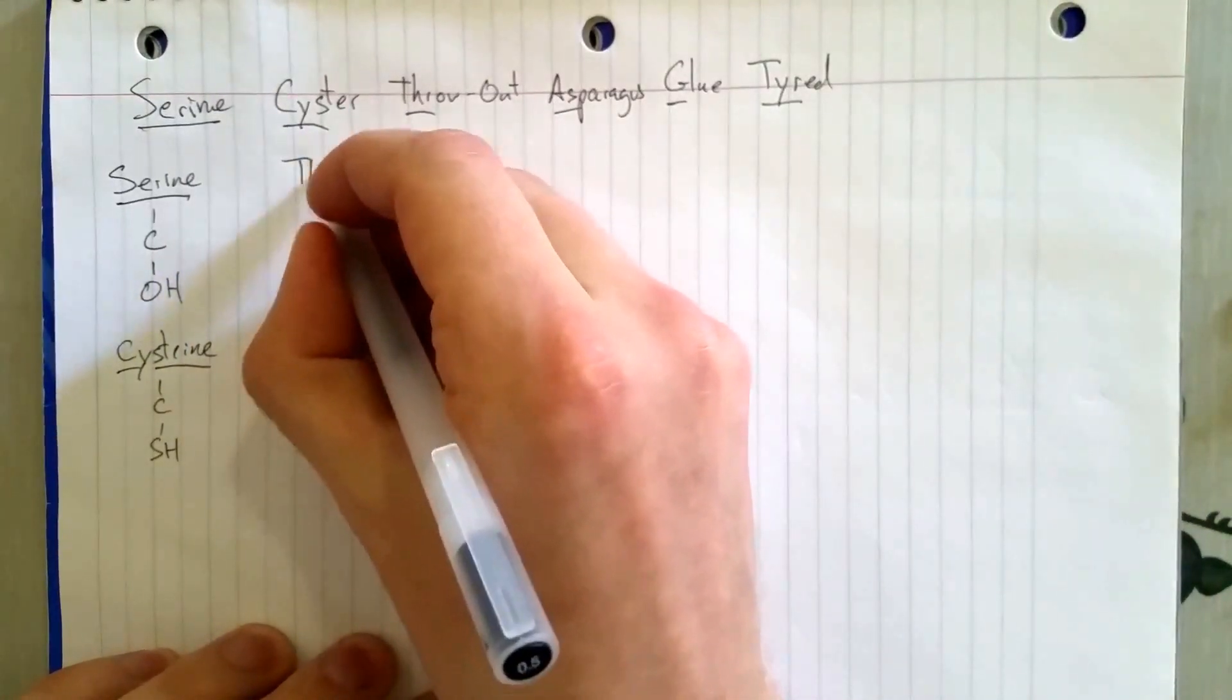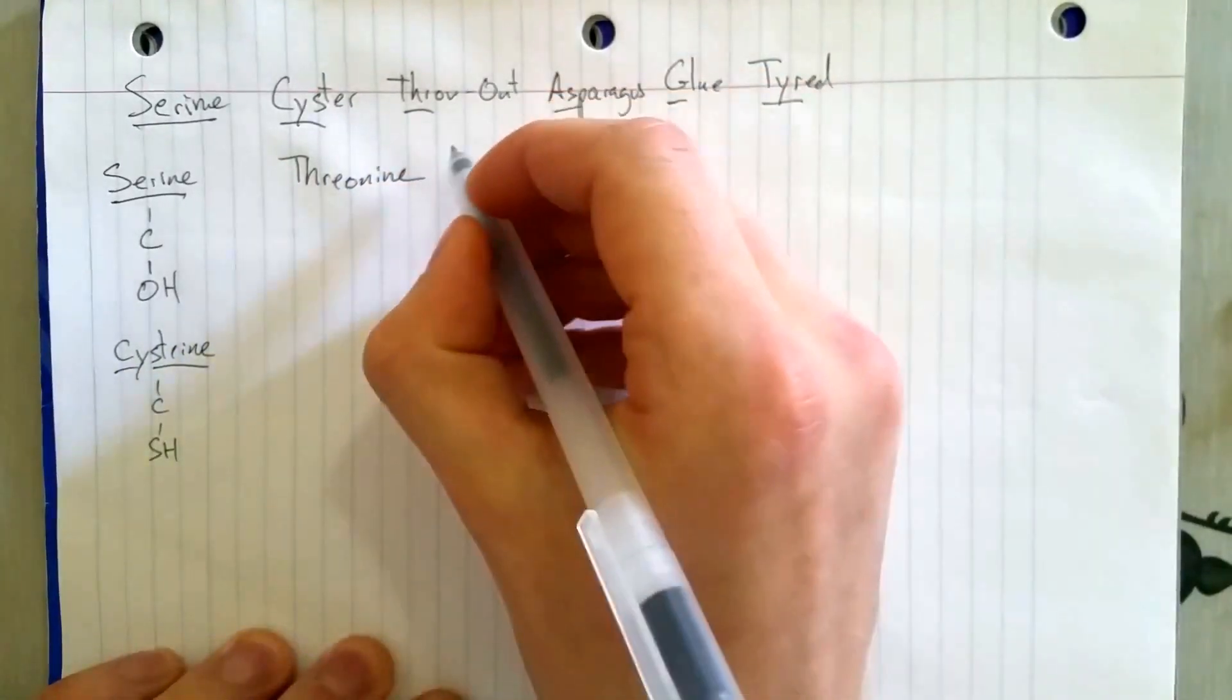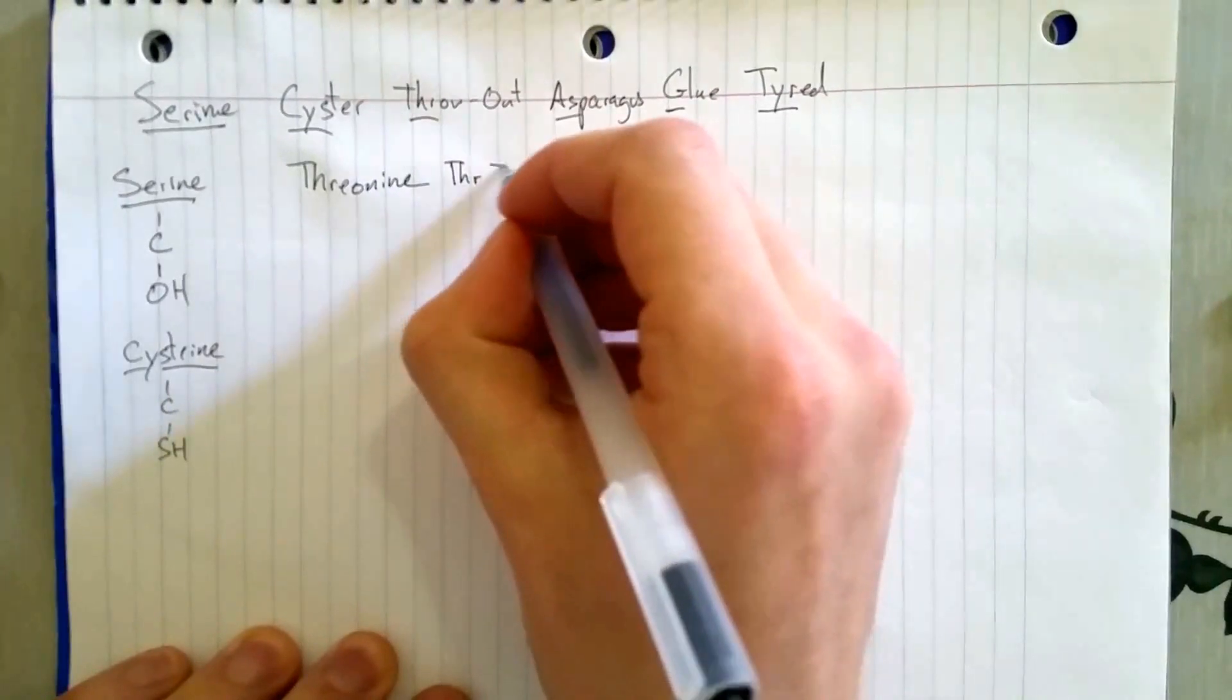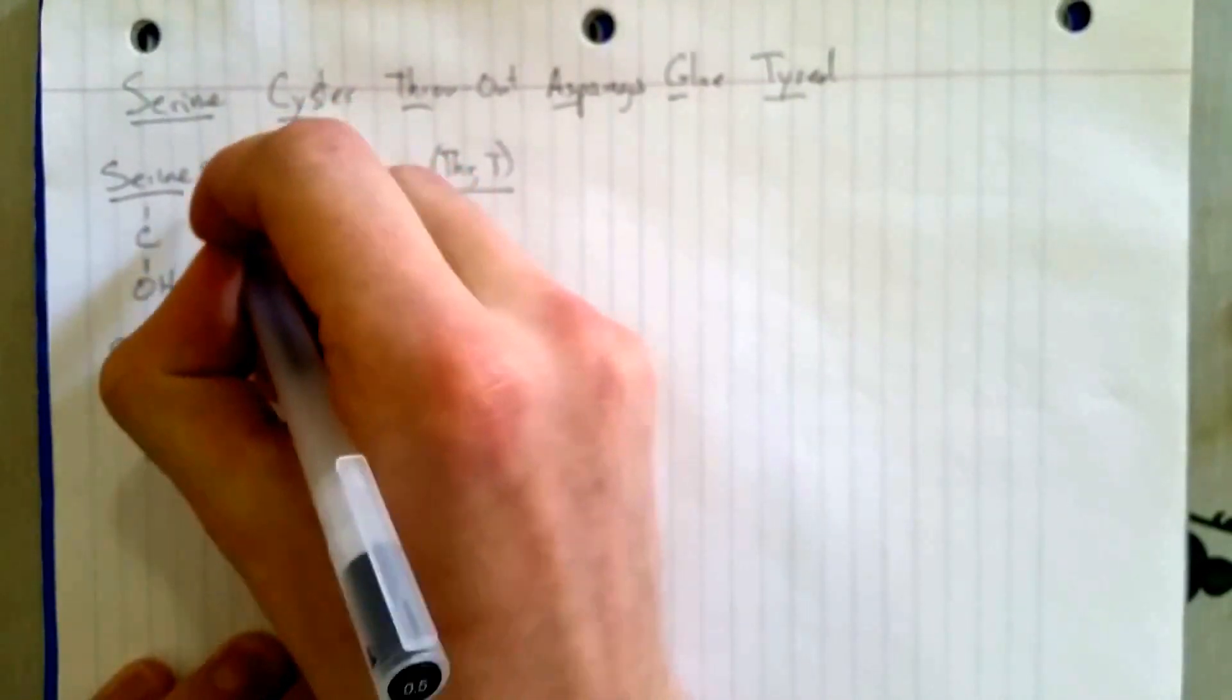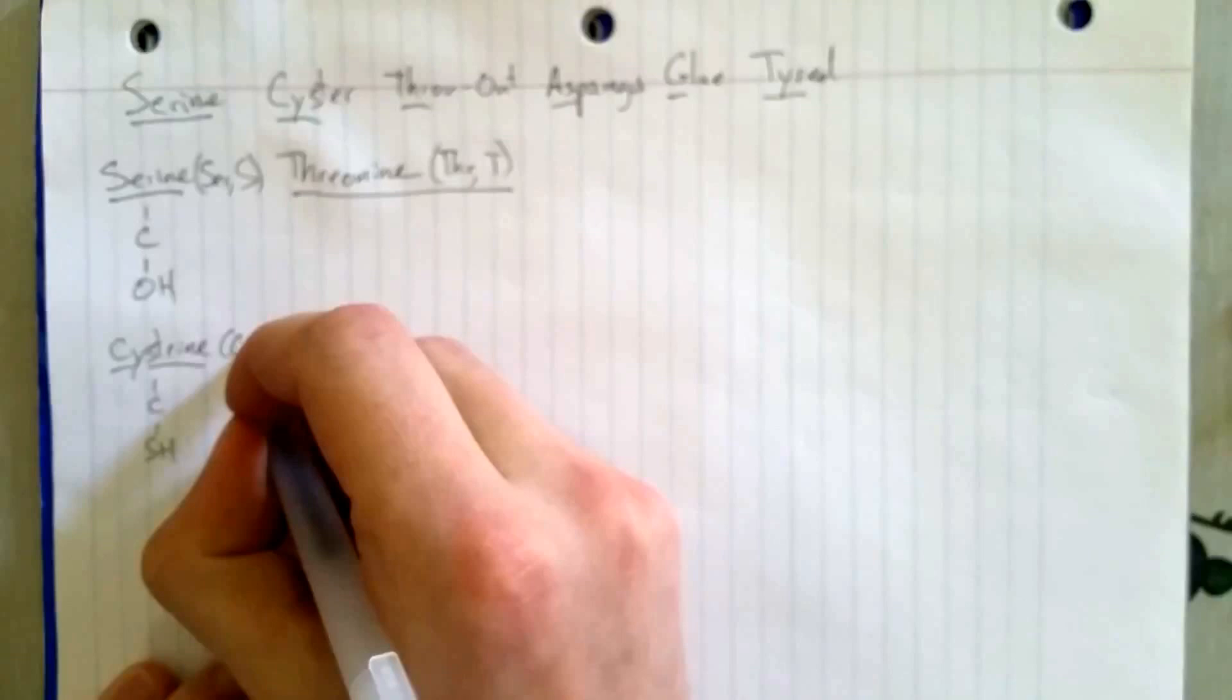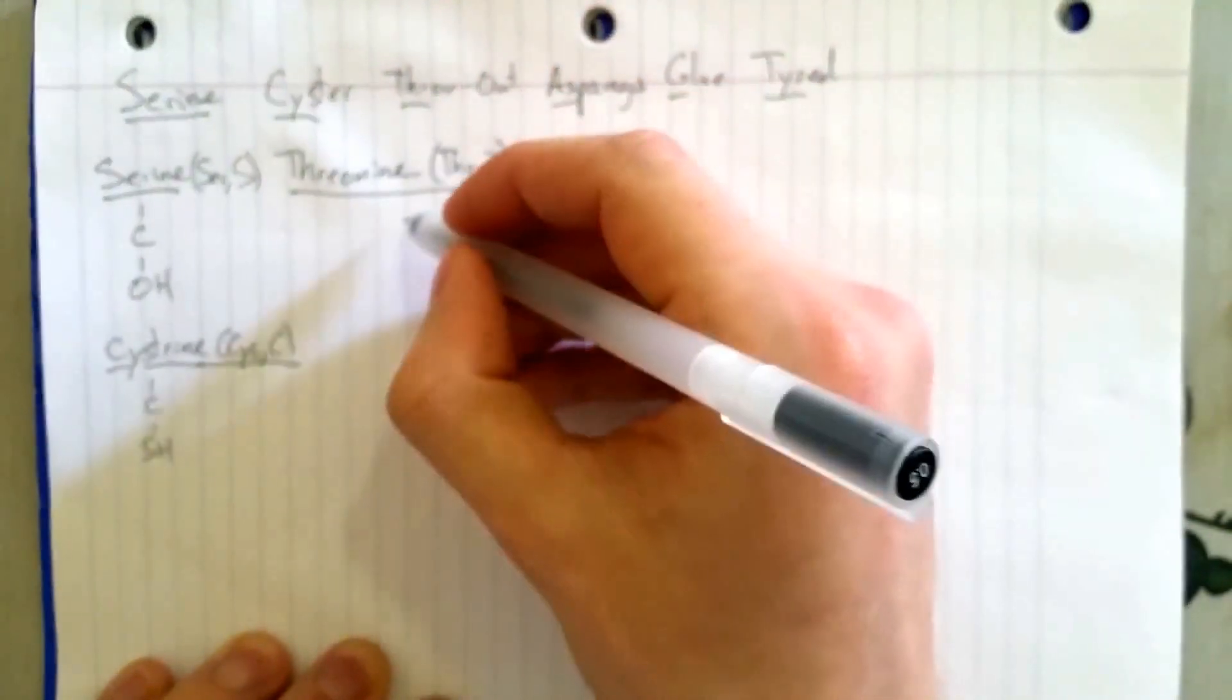Then they throw it out. So, that reminds us of threonine. T-H-R-T. Just realized I forgot these abbreviations. They're very easy to remember. Cysteine was actually discovered studying cis. That's how it got its name.